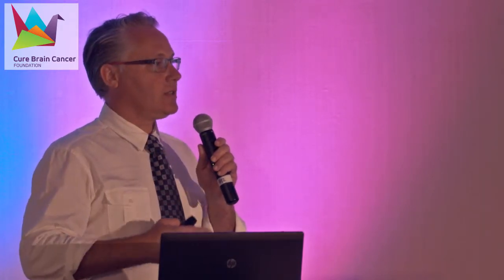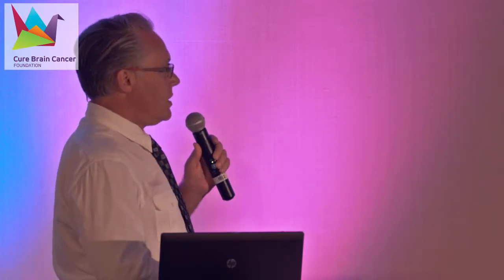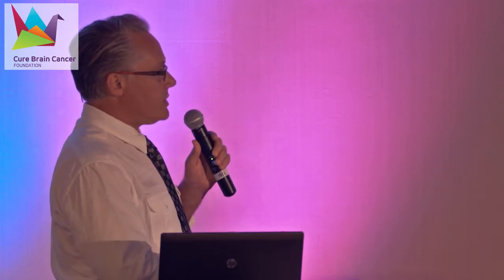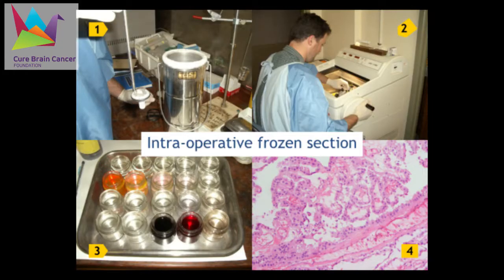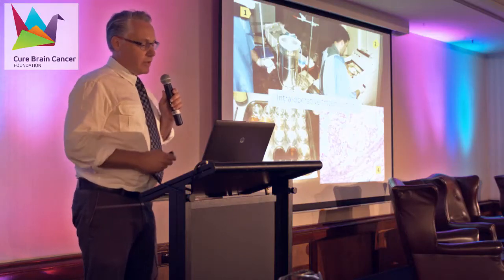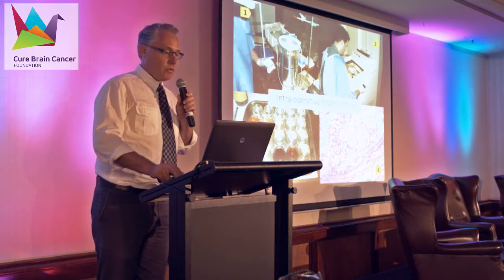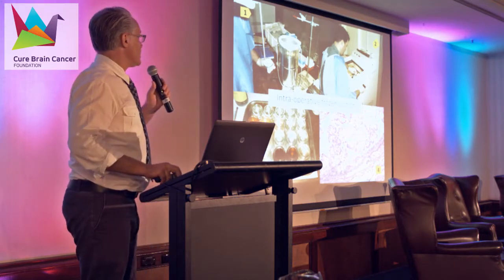That machine keeps the tissue frozen. When it's frozen and hard, we can cut very thin sections — and we need very thin sections to be able to look through them with the microscope. Once those frozen sections are cut, they're stained and then we can look at them under the microscope. That's when we call back to the surgeon and say, 'we think this is a high-grade glioma,' or whatever we think it is.